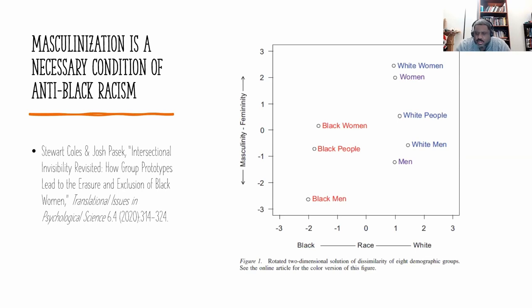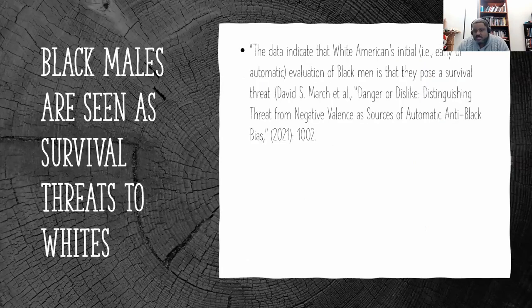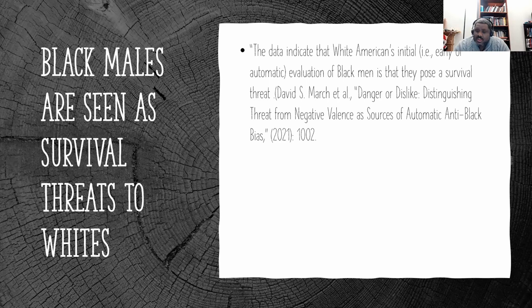A recent study on intersexual invisibility by Coles and Pasic shows high levels of correlation between masculinization and race that don't exist in other racial groups — the more someone perceives Blackness or a racial stereotype, the more they identify that stereotype with Black men. In recent data, Black men are seen as actual survival threats to whites — any perpetration by Black men, whether crime, walking across the street during Jim Crow, or even the so-called 'eyeball rape' of looking at a white woman, is thought to be an intentionality toward the death of white people.